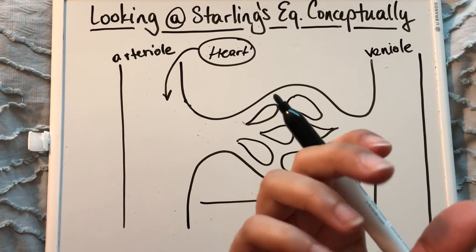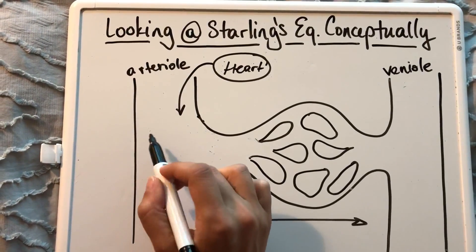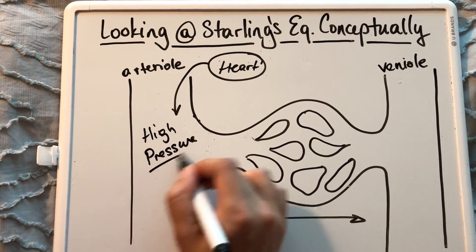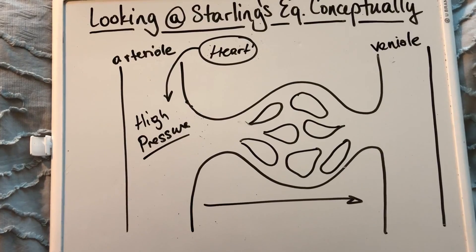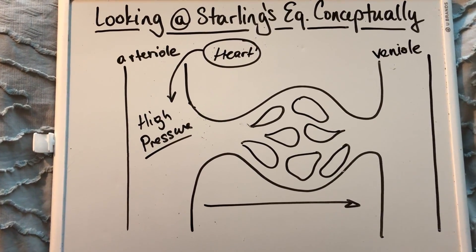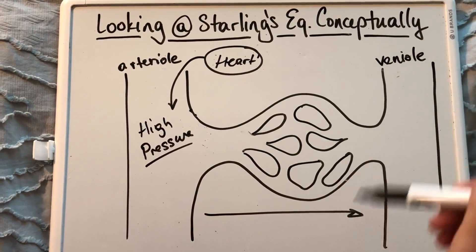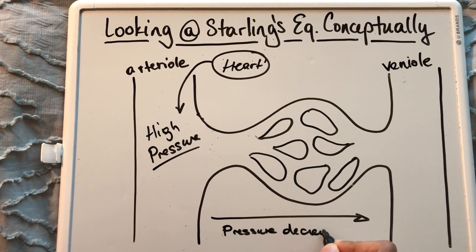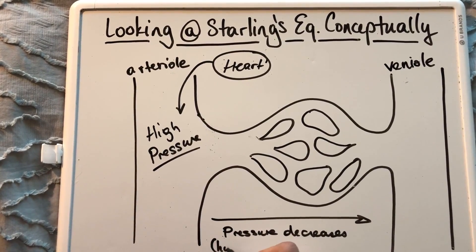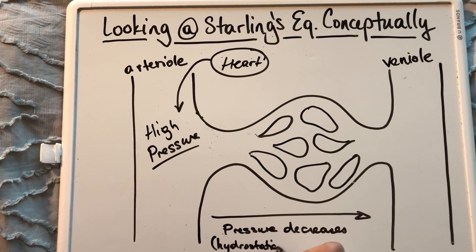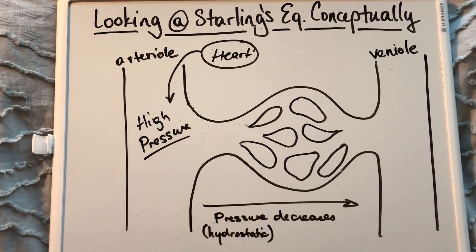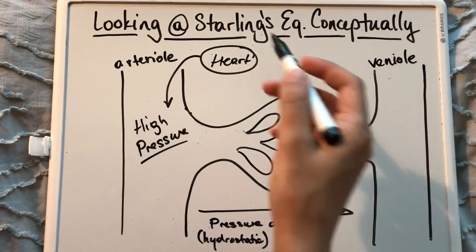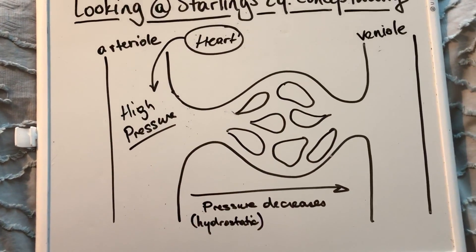The heart is going to supply a strong force and this is going to result in high hydrostatic pressure on the arteriole side. Hydrostatic pressure is basically another word for blood pressure. And as you move from arteriole to venule, your pressure decreases. This is because of the energy it takes to move the fluid across — the farther you get from the pump, the lower the pressure.